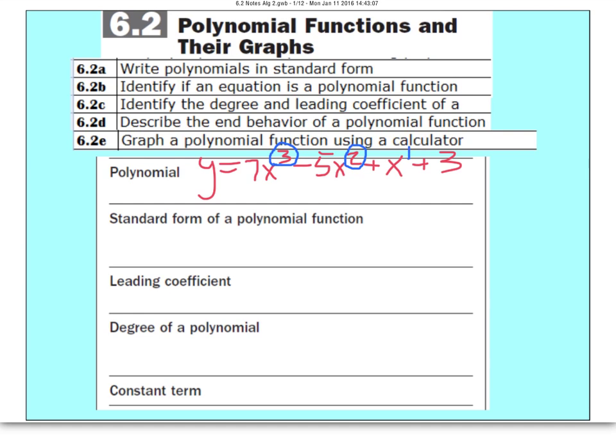By the way, x to the first here, that's a 1. And that 3 is fine. So we have the highest exponent is a 3, the other is a 2 and a 1, and that's great. So that's considered a polynomial.